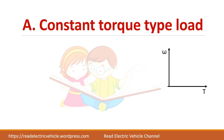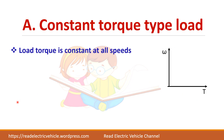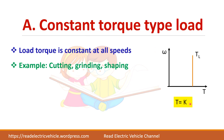The first type is constant torque load. As the name says, torque is constant at all speeds. This type of load is found in cutting, grinding, and shaping machines, as well as in low-speed hoists — machines that move loads between lower and higher levels.